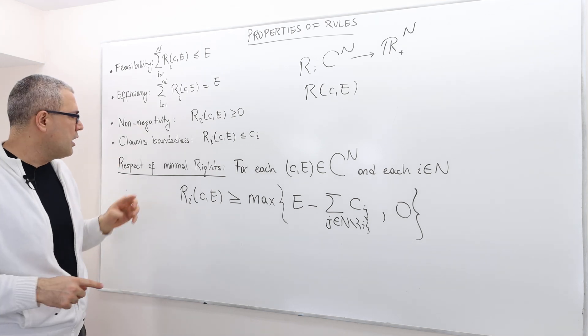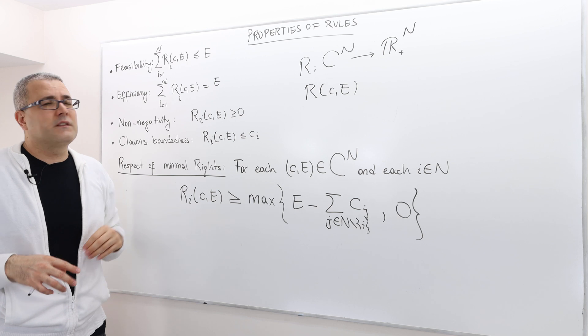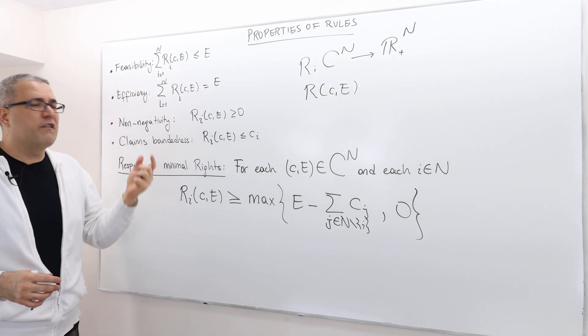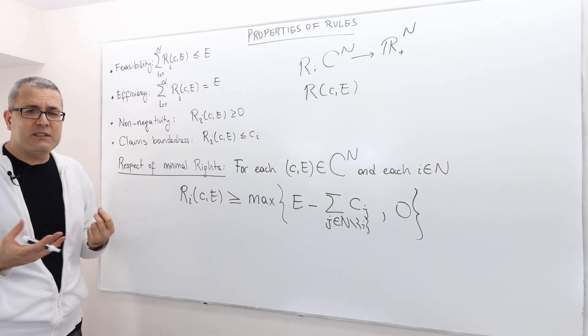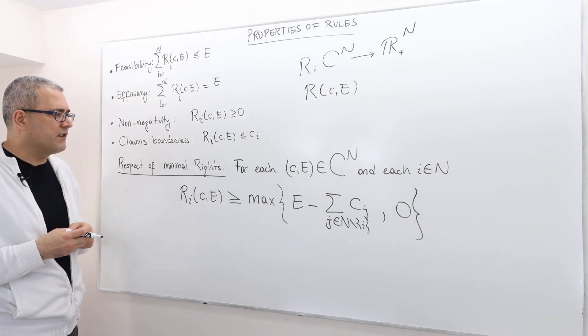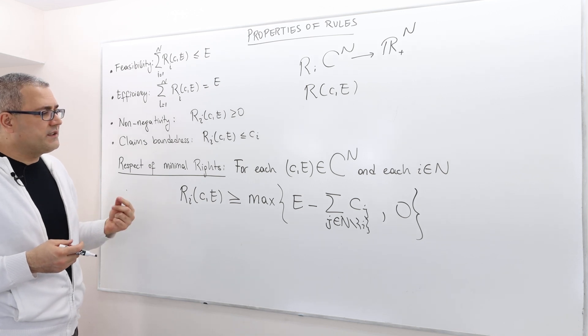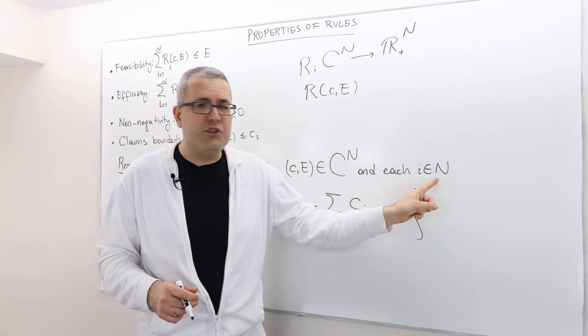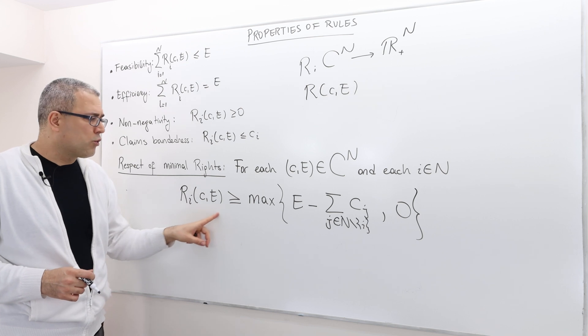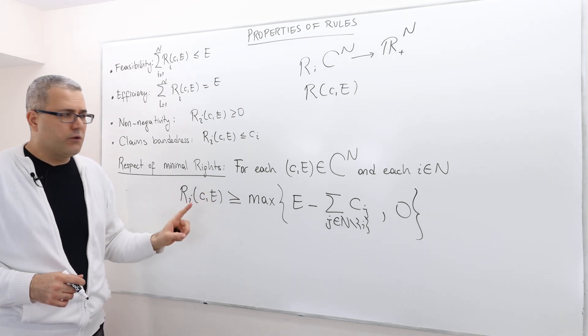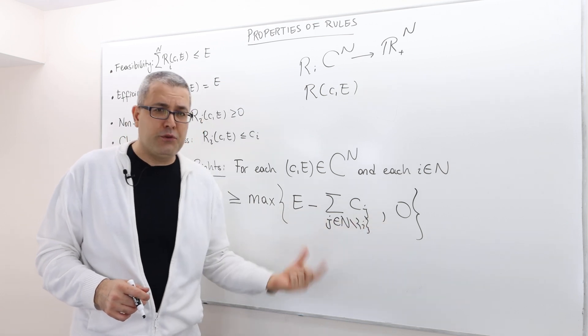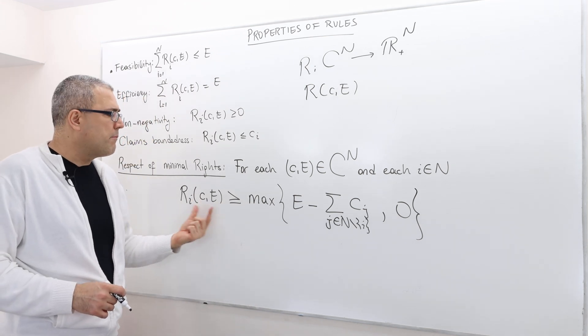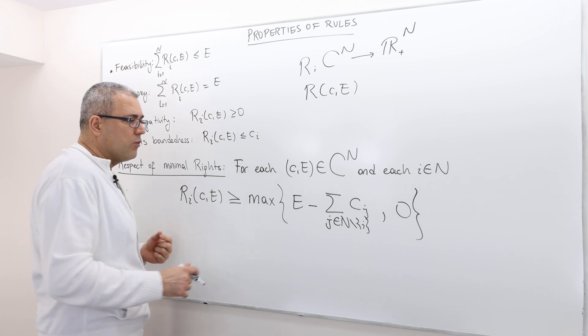On top of those four, we want the rules to satisfy some other properties. Well, one of them is called respect of minimal rights. Well, in some sense, this is individual rationality kind of assumption, axiom if you will. What does it say? It says for any claim problem and for any agent, his or her award should be greater than or equal to the max of these two terms, whatever or whichever is the biggest.